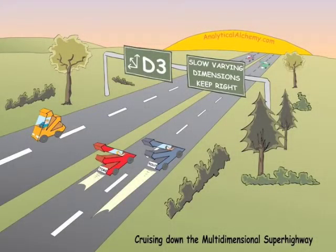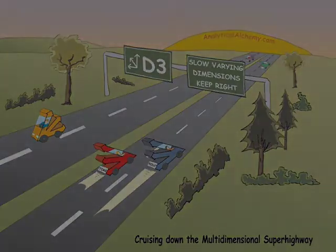Dimensions are often represented by three arrows symbolizing the axes of a three-dimensional coordinate system. This illustration depicts the multi-dimensional superhighway down which you may someday find yourself cruising.